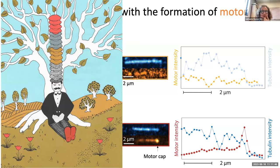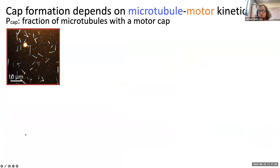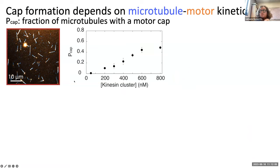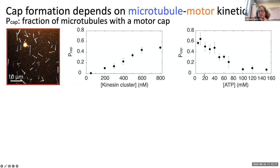We quantified this cap formation process by measuring the fraction of microtubules in our field of view that have a motor cap — the P_cap. The fraction of microtubules with a cap increases when we increase motor concentration, and decreases when we decrease ATP concentration. This is consistent with the phase diagram: more kinesin motors → more caps → contraction; more ATP → fewer caps → extensile behavior.